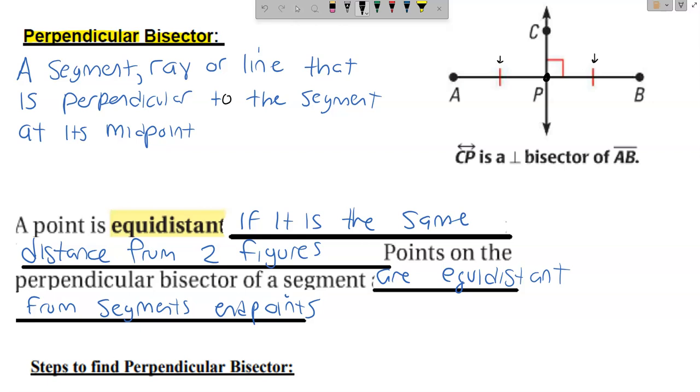hence the little congruence marks that we have there. And when it meets at point P, it forms a 90 degree angle. So those are the two elements that we need to look for when we are, number one, recognizing it in a diagram, and number two, being able to find its equation.